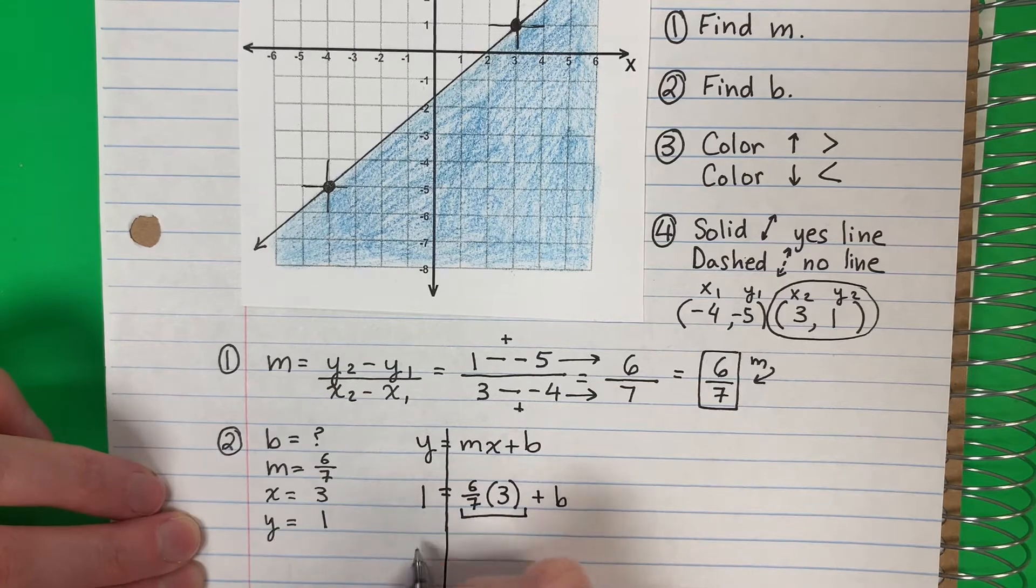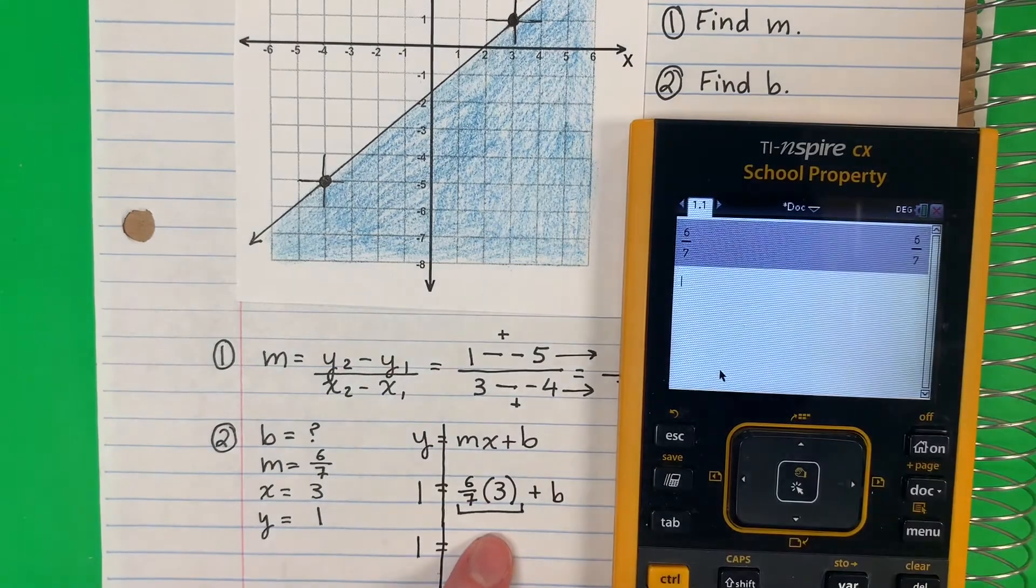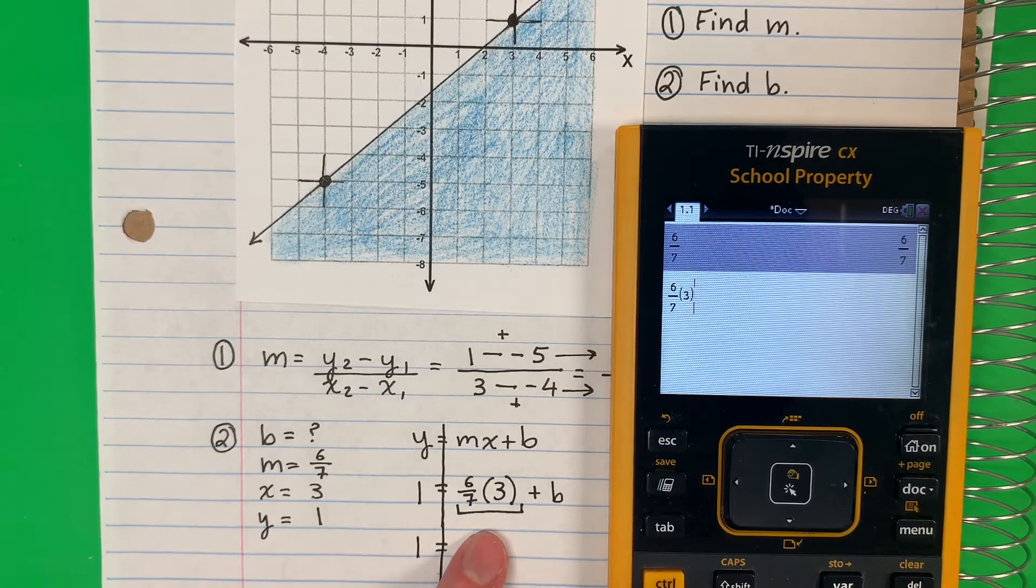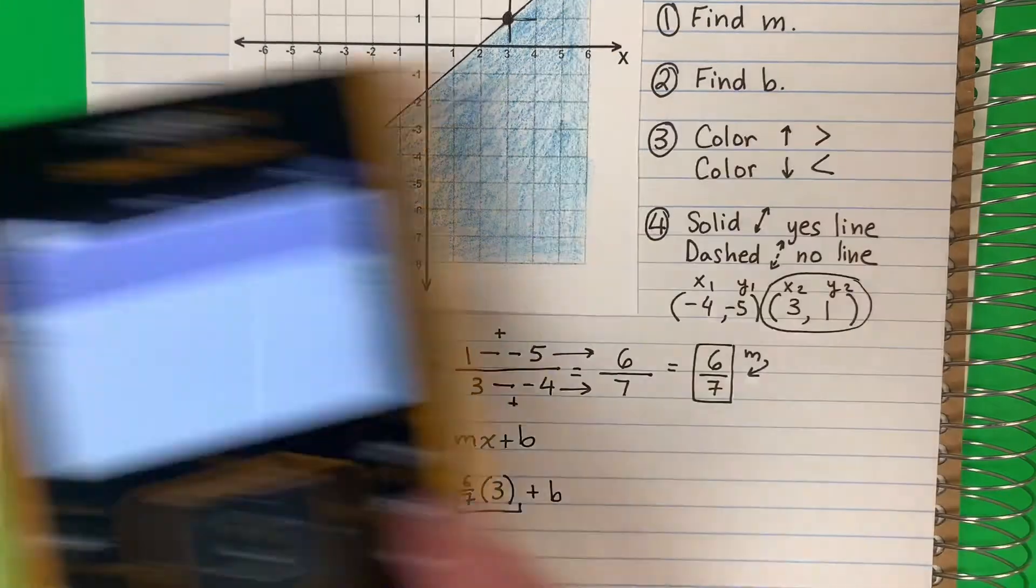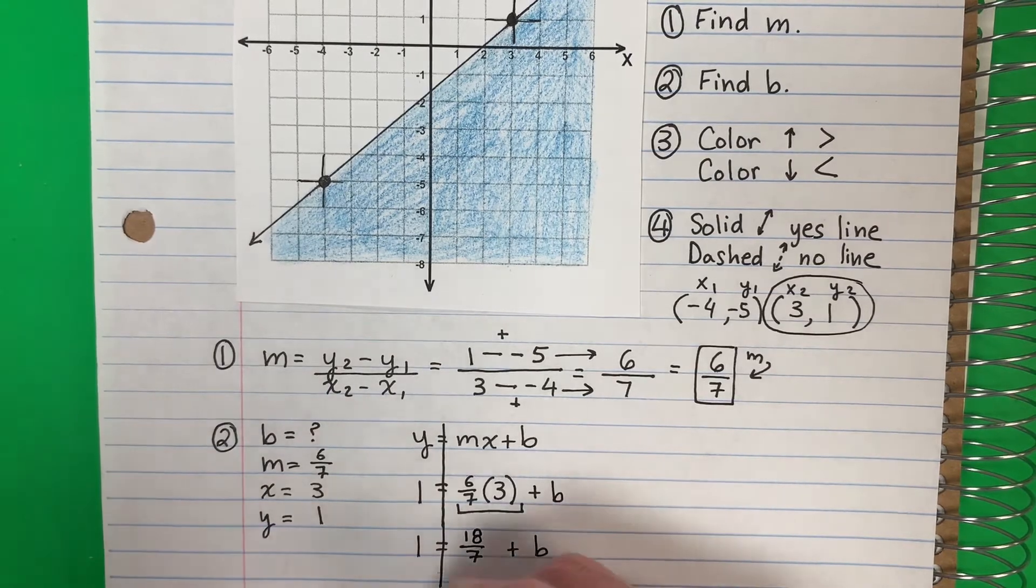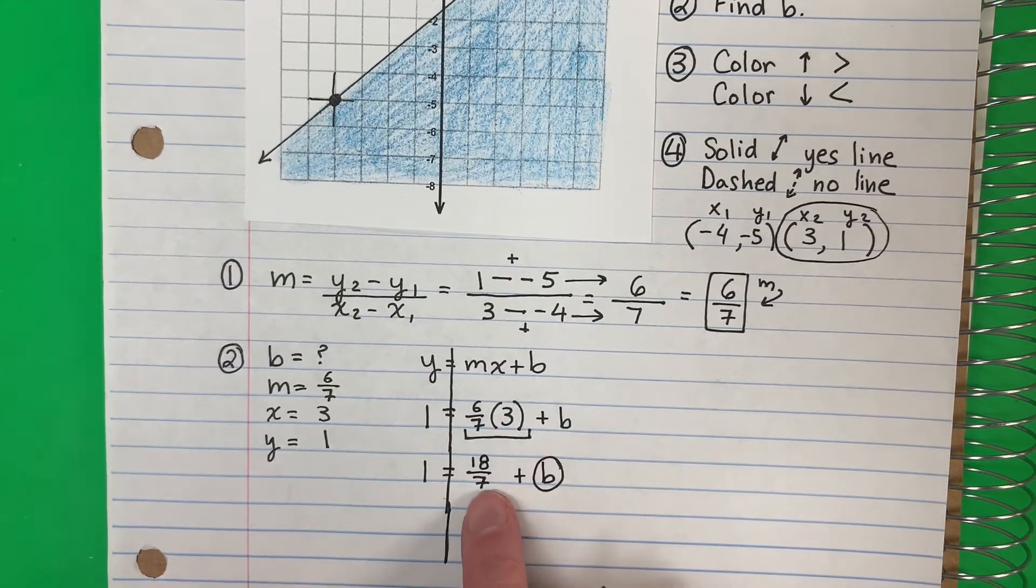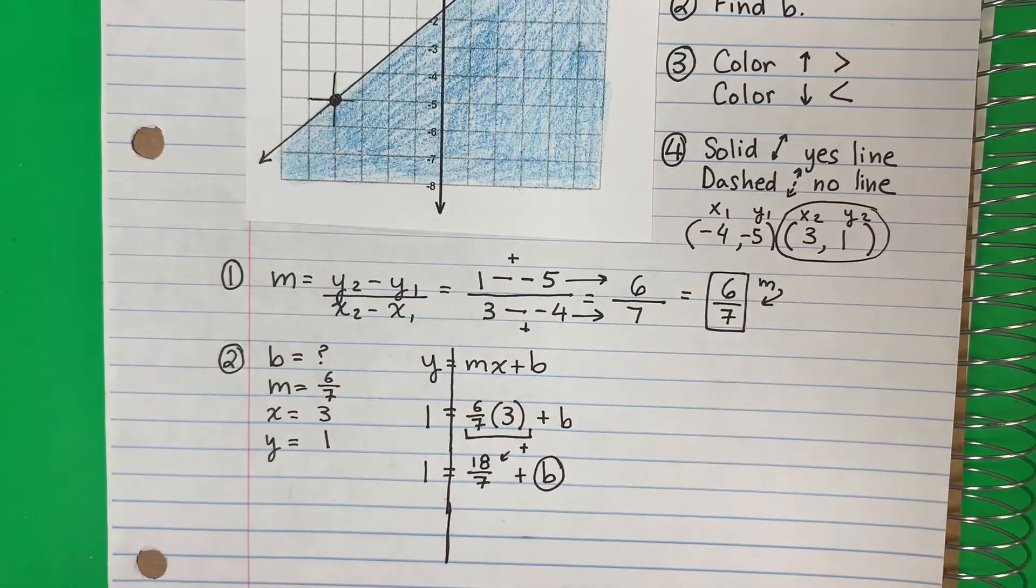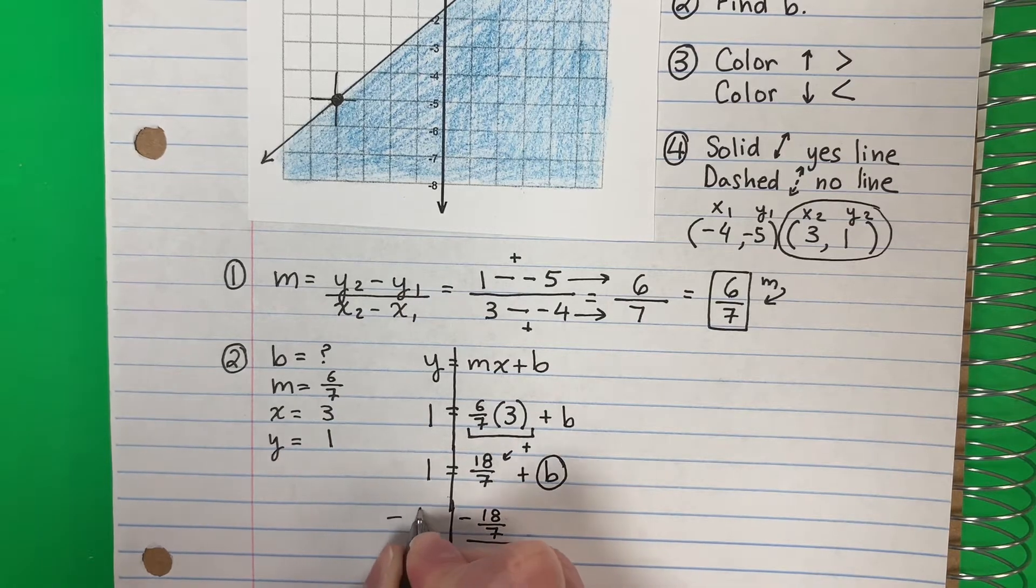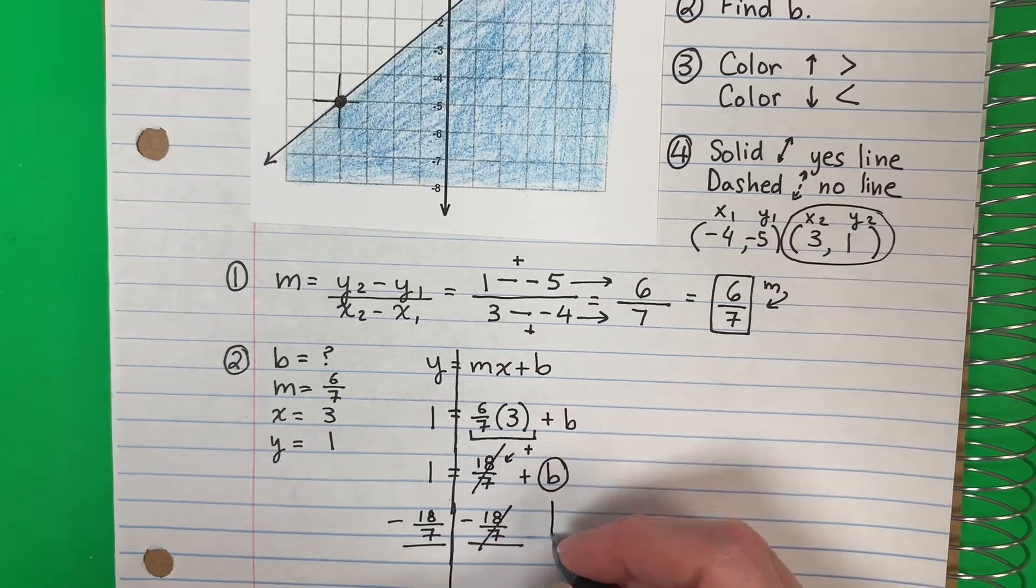Remember parentheses first, paréntesis primero. Copy 1, copy equal, and I will put the parentheses in the calculator. Six sevenths as a fraction times parenthesis 3 is eighteen sevenths. Copy plus b. I want b alone. What number gets rid of b? Eighteen sevenths, and it's positive. The opposite of positive is negative, so minus eighteen sevenths. Copy to the other side minus eighteen sevenths. So this cancels, copy down b.